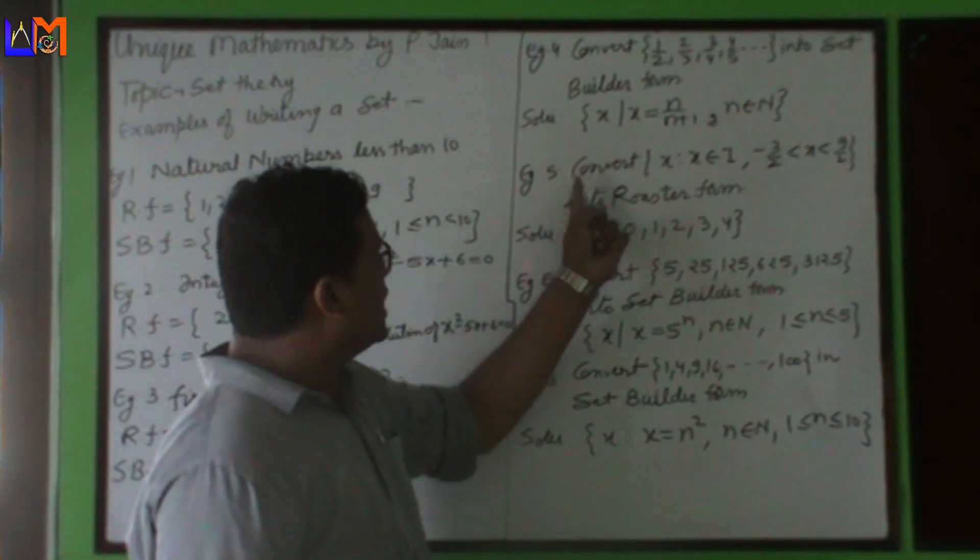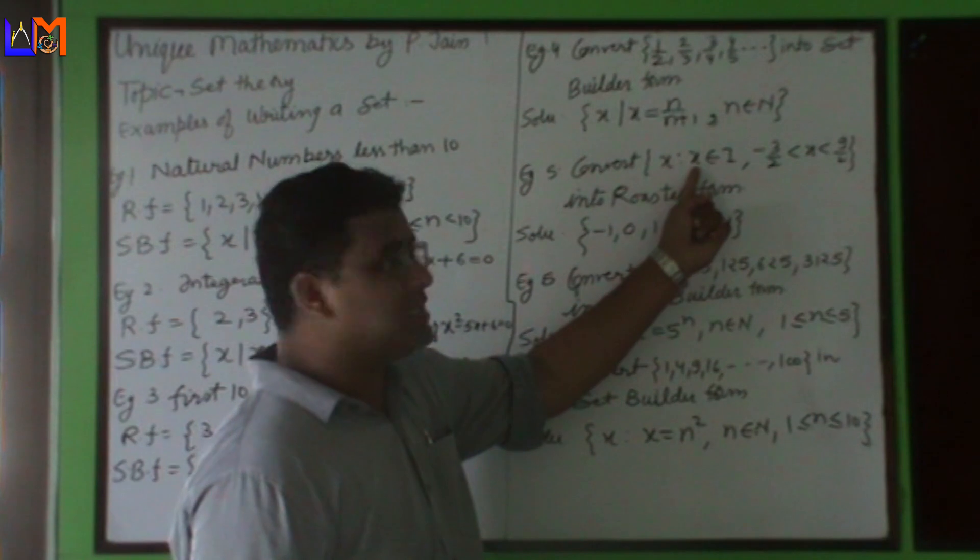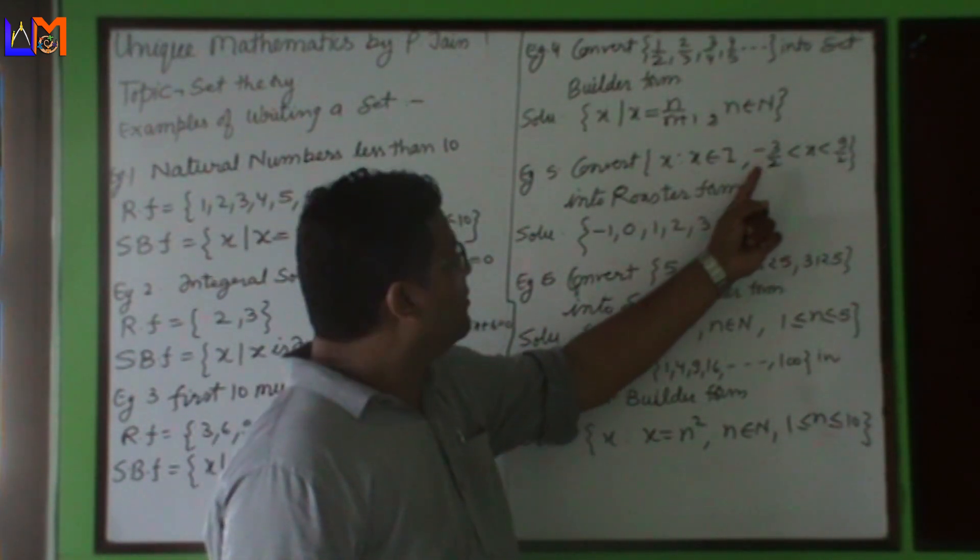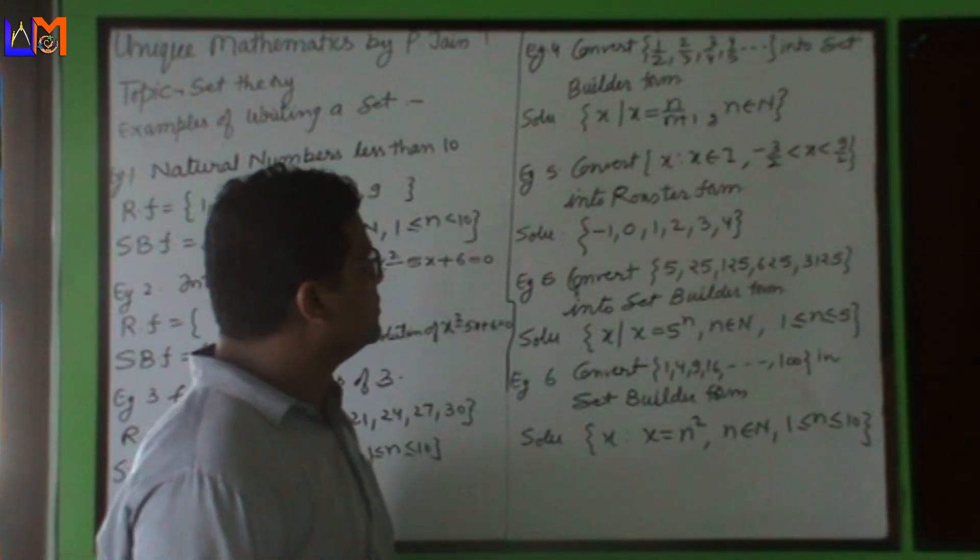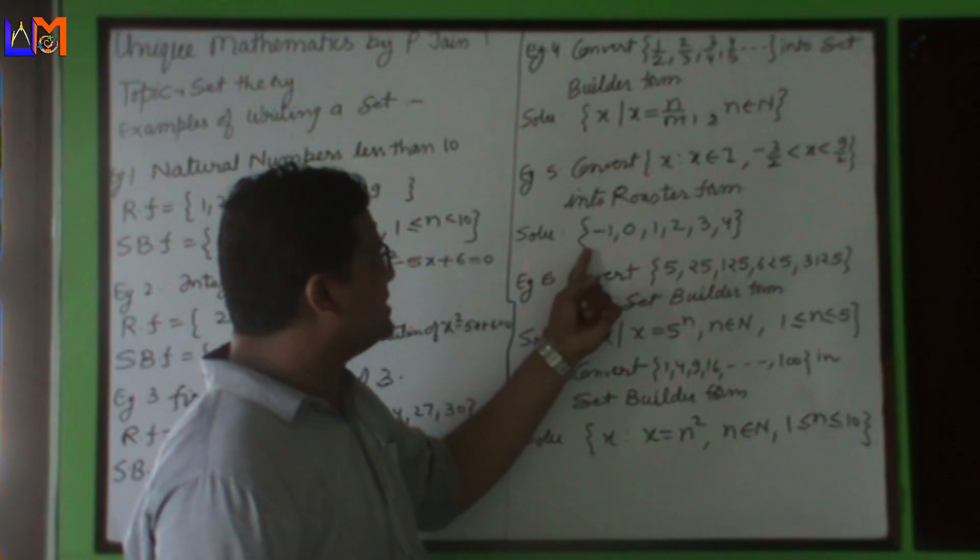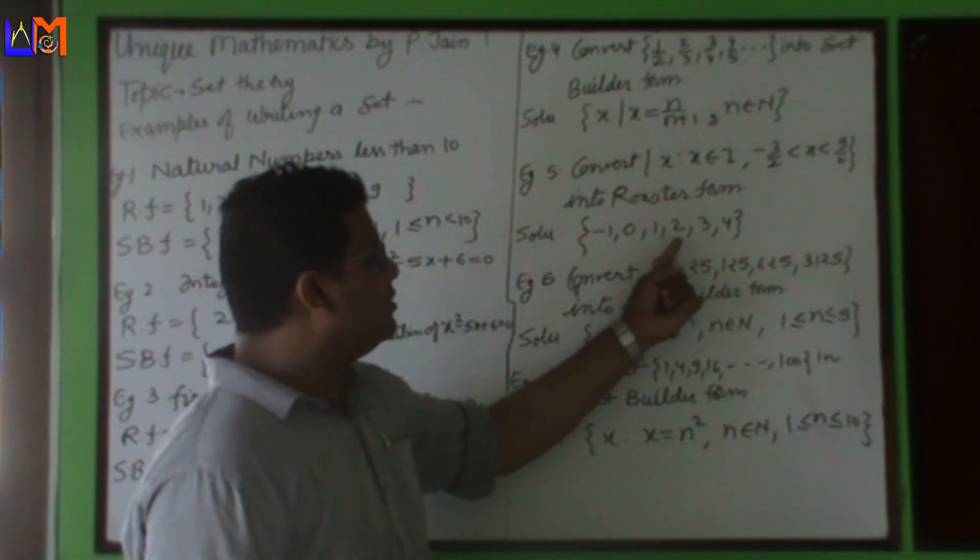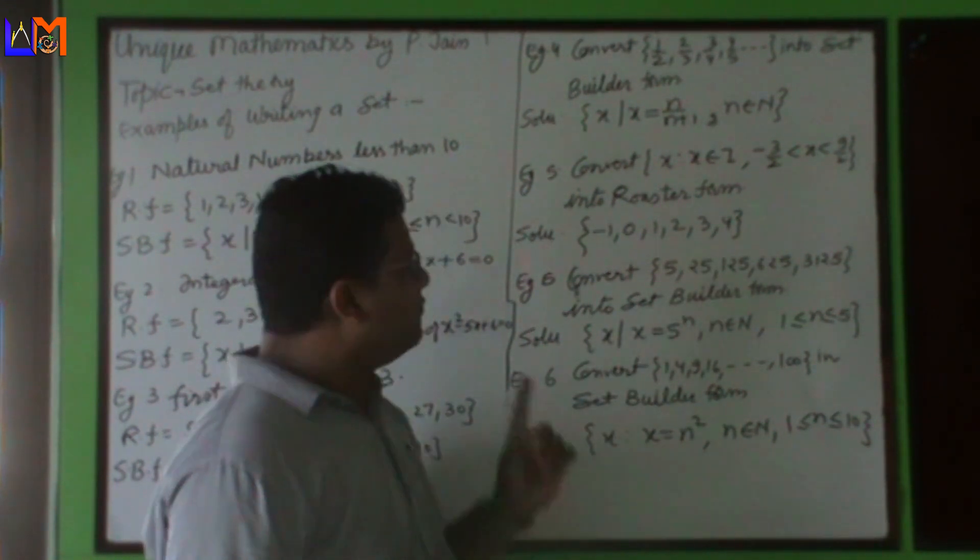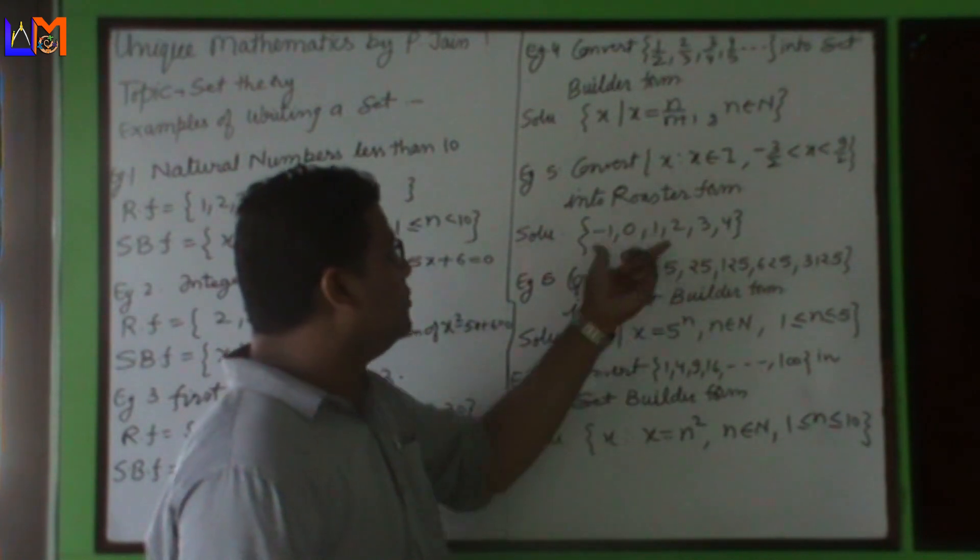Example 5: convert this set builder form into roster form. X such that x belongs to integers, minus 3/2 to 9/2. Into roster form, in curly braces we can write: minus 1, 0, 1, 2, 3, 4. All integers which lie between minus 3/2 and 9/2.